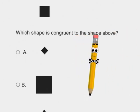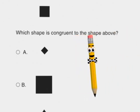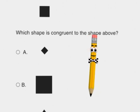Remember, congruent means the same size and shape no matter which way the shape is turned.